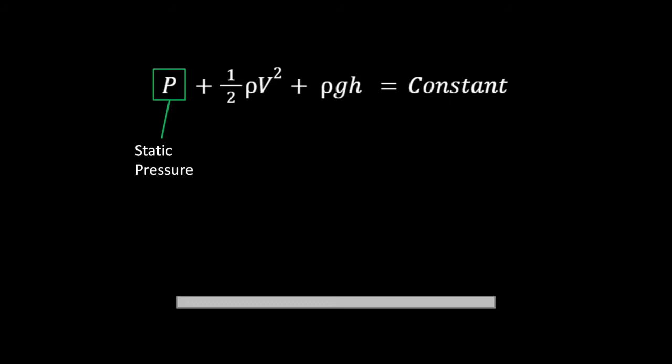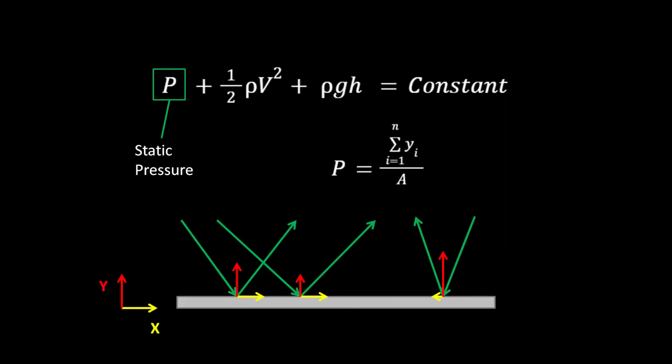The static pressure of a fluid is the pressure caused by each individual molecule hitting the surfaces. We can break the force from each of these interactions down into their x and y components but when we sum all of our y's over an area and then divide our result by that area we get the static pressure.